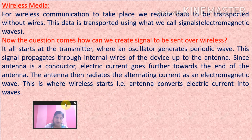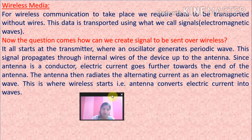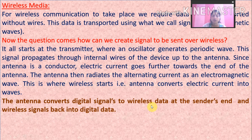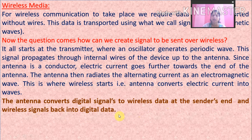The antenna is the main device in wireless media. It converts digital signals to wireless data at the sender's end, and converts wireless signals back into digital data at the receiver's end.